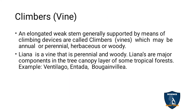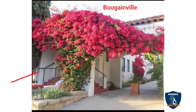Next, climbers or vines. The climbers have weak stems and need support to grow. The climber's stem may be herbaceous — meaning the stem is green and doesn't possess secondary growth. In some, they are woody also and secondary growth is seen — they are called lianas, which are woody perennial climbers. They are seen in the tree canopy layer of some tropical forests. Examples: Ventilago, Entada, Bougainvillea — Bougainvillea is known as kagithapoo.